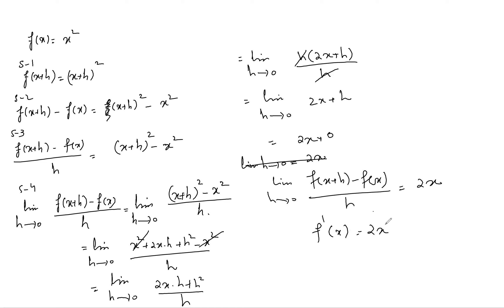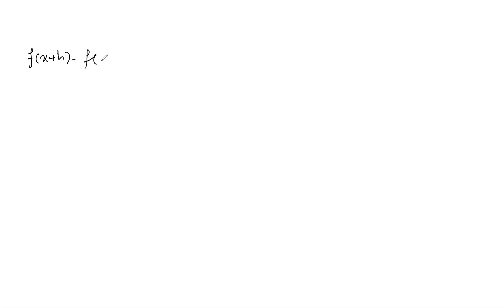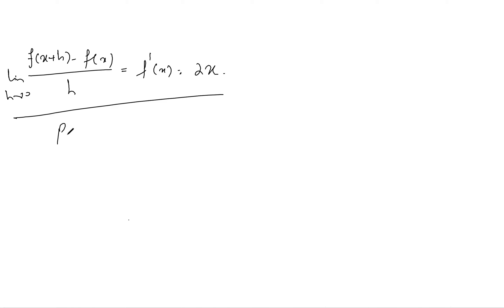We've seen that the definition method is a long process. There is a shorter way called the power rule. In the power rule, if you have a function f(x) = x^n, where n is a constant, we can find the derivative much more quickly.